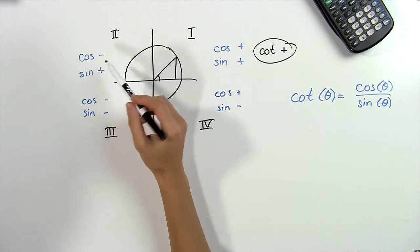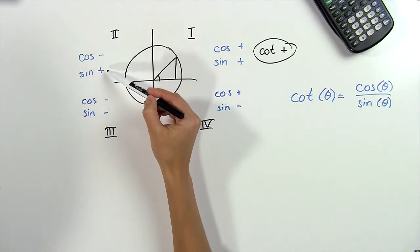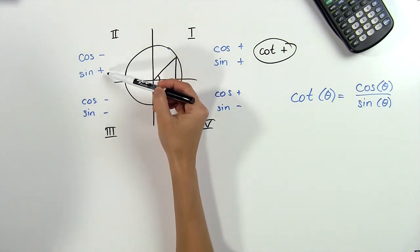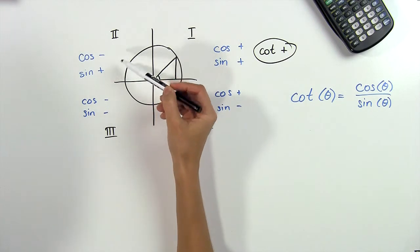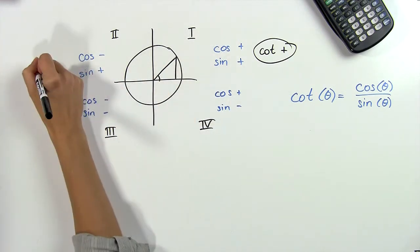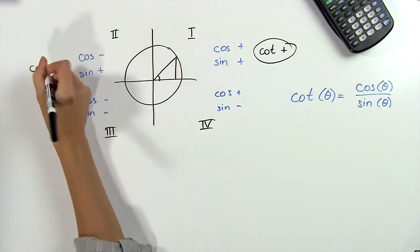In the second quadrant, we again have cosine divided by sine, so we have a negative number divided by a positive number, which is always going to be negative. In the second quadrant, the cotangent is always negative.